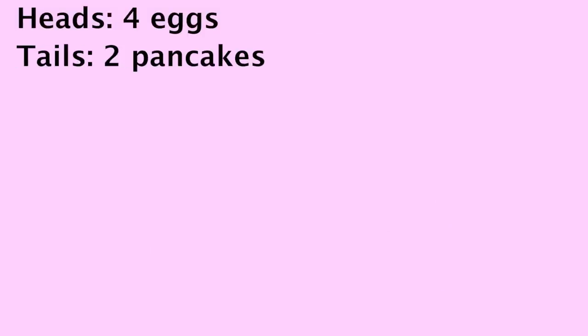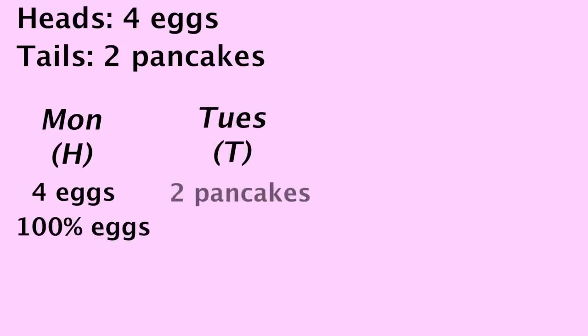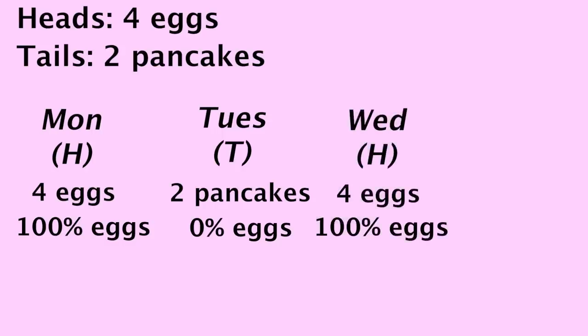Imagine every day you flip a coin in the morning. If it's heads, you eat 4 eggs for breakfast, and if it's tails, you eat 2 pancakes. So let's just say on Monday, you flip heads and eat 4 eggs. That means 100% of what you ate was eggs. If the next day you flip tails, you'd eat 2 pancakes, meaning 0% of what you ate was eggs. The next day, if it was heads again, you'd eat 4 eggs, which is again 100%. And we'll assume tails for the fourth day, which would match Tuesday.